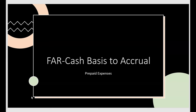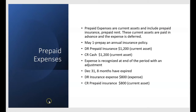We're going to zero in today on cash basis to accrual expenses, particularly prepaid expenses — how much was paid in the current year versus how much is incurred in the current year. Prepaid expenses are current assets and include prepaid insurance, prepaid rent. These current assets are paid in advance, but the expense is deferred. So let's say on May 1st of the current year, we prepay an annual insurance policy for $1,200.